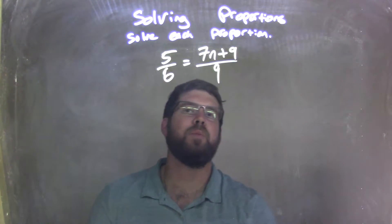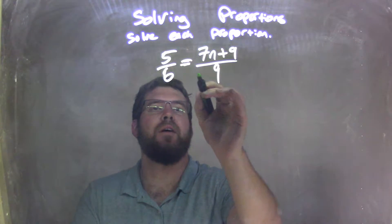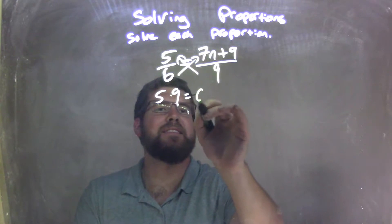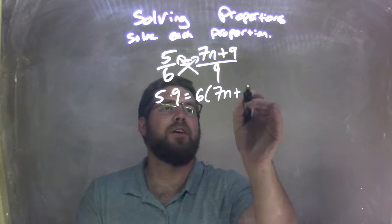my first step would be to cross-multiply. Well, I have 5 times 9 on the left, and 6 times 7n plus 9 on the right.